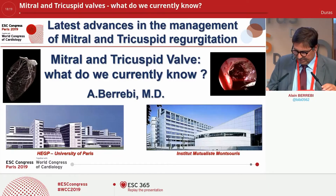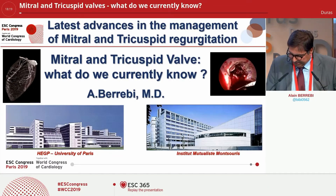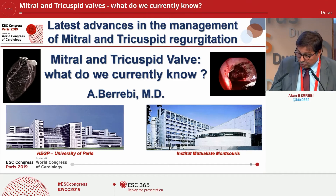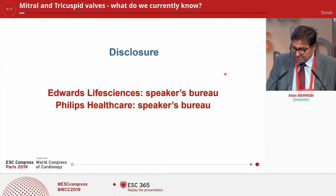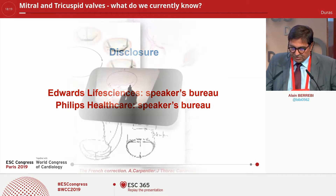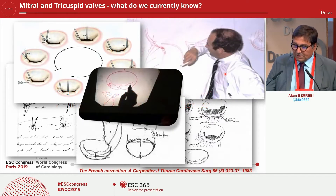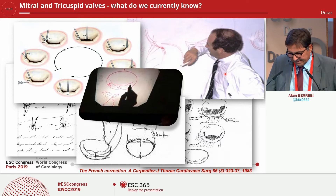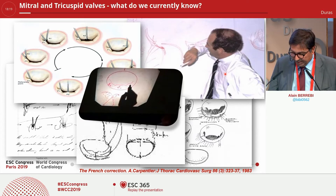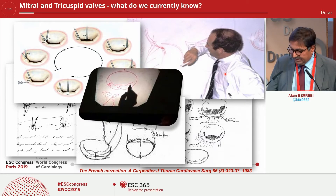Mr. Chairman, ladies and gentlemen, it's a great pleasure to be with you to try to resume in eight minutes what we currently know. This is my disclosure. I would like to say that what we currently know comes from lessons I have learned from my mentor, Alain Carpentier, since 1983, with the first publication of the French Correction. Lessons from him are still valid, I can tell you.